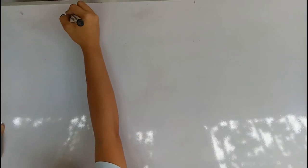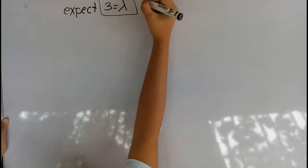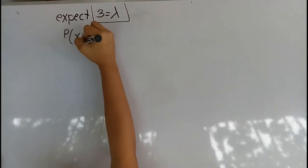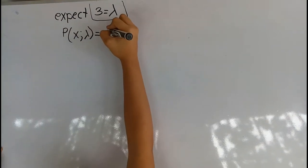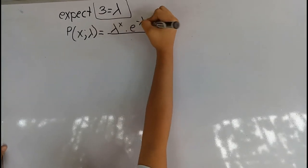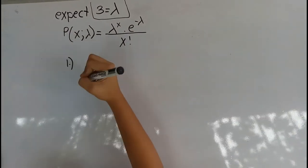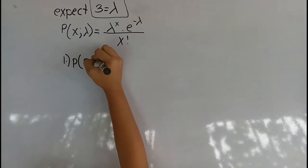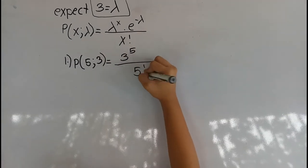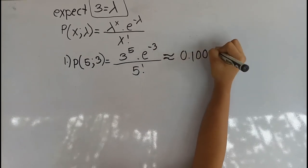In this problem, the expected value, or the value of lambda, is equal to 3. Given the formula, probability of x given lambda equals lambda raised to x times e raised to negative lambda, all over x factorial. Number 1: the probability of 5 given 3 is equal to 3 raised to 5 times e raised to negative 3, all over 5 factorial, which is equal to 0.1008.